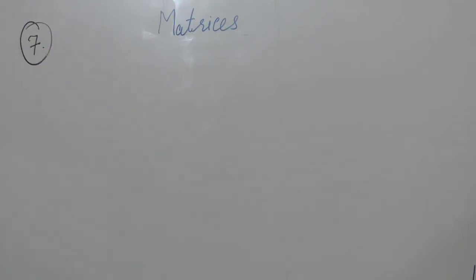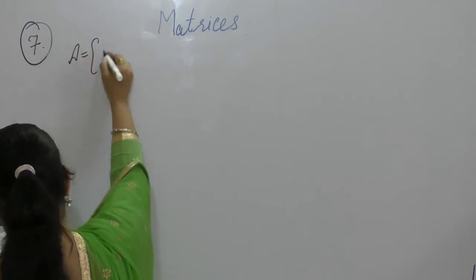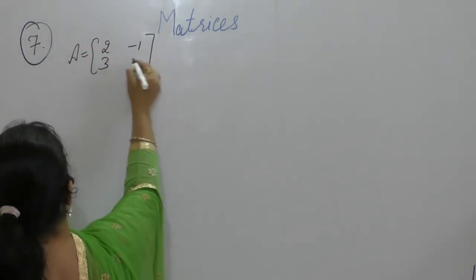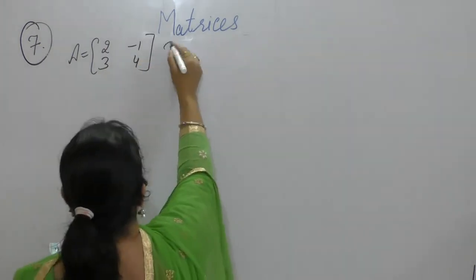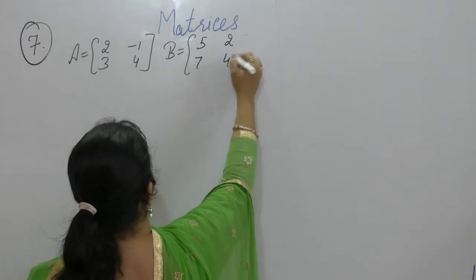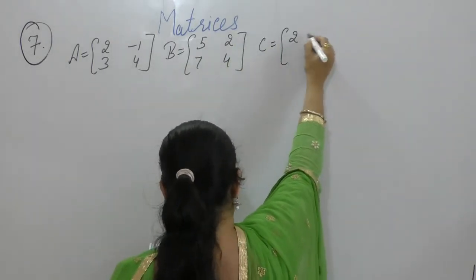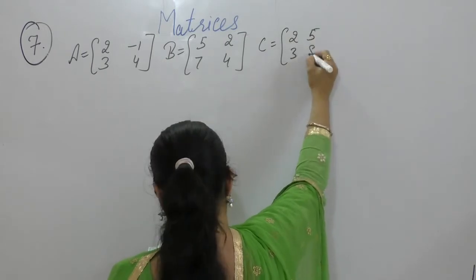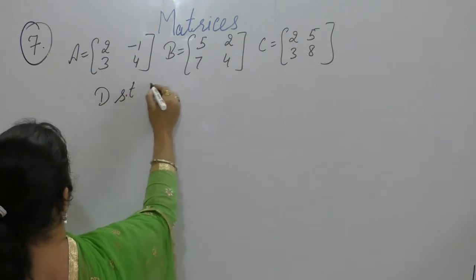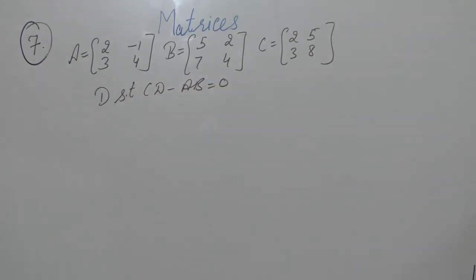Next question: Let A = [[2, -1], [3, 4]], B = [[5, 2], [7, 4]], C = [[2, 5], [3, 8]]. Find a matrix D such that CD - AB = 0.